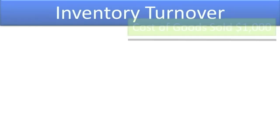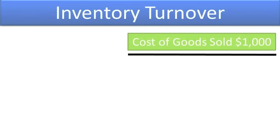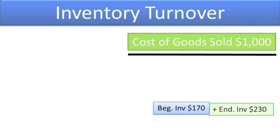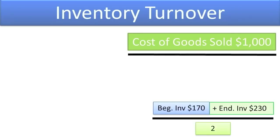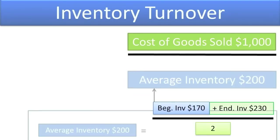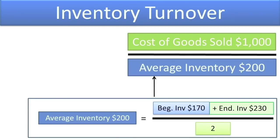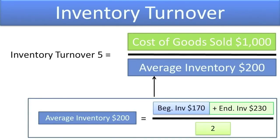Example: assume Company A incurred $1,000 of cost of goods sold during the year. Its beginning inventory was $170 and its ending inventory was $230, totaling $400, which is then divided by 2 for an average inventory balance of $200. Its inventory turnover ratio would be 5. This means that on average, Company A was able to purchase $200 worth of inventory and sell it 5 times during the year.